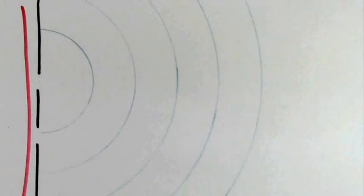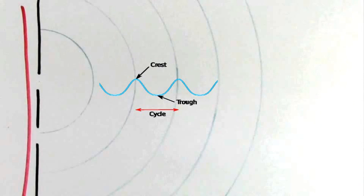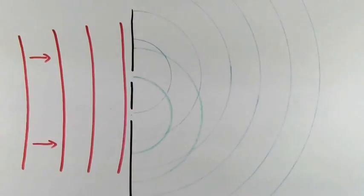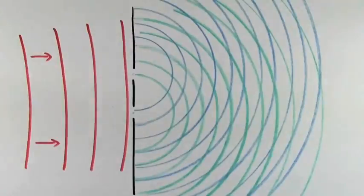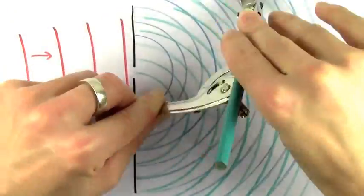In this drawing, you can imagine that every line represents the crest or peak of the wave, and the midway points between lines represent the trough or valleys of the wave. So far this diagram just shows the wave emanating from the top hole, but waves are going to emanate from the bottom hole as well. When the waves from the two holes overlap, it'll cause wave interference.